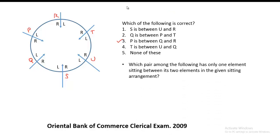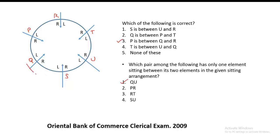Another question: which pair among the following has only one element sitting between its two elements in the given seating arrangement? The first option is Q and U — S is sitting between Q and U. P and R: nobody is sitting between them. R and T: nobody is sitting between them. S and U: nobody is sitting between them. Therefore the correct option is Q and U, because between Q and U there is one person sitting, that is S.